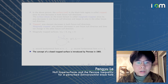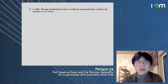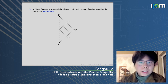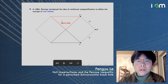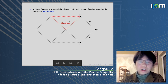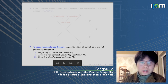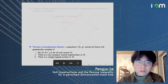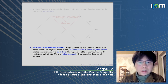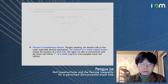Using this concept, Penrose proved his famous incompleteness theorem. Another important notion is null infinity. Based on these two concepts — the closed trapped surface and null infinity — Penrose proved the incompleteness theorem: the existence of a trapped surface implies either the existence of a black hole or a singularity.